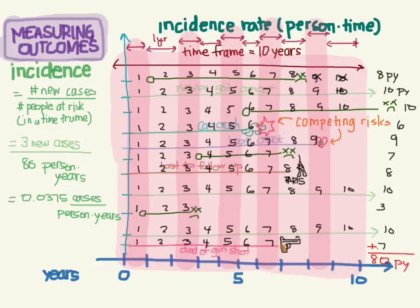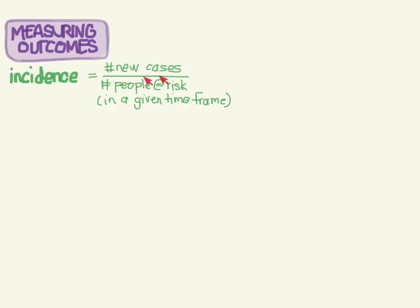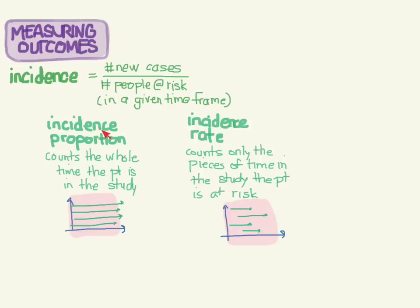Before we go, I wanted to talk about two more things about incidence. Number of new cases over the number of people at risk. We actually had two ways of measuring these number of people at risk. Normal incidence, sometimes called incidence proportion, counts the whole time that the patient is in the study in the denominator. For incidence rate, also called person-time, it only counts pieces of time that the patient is in the study while they're at risk, so not the whole time.